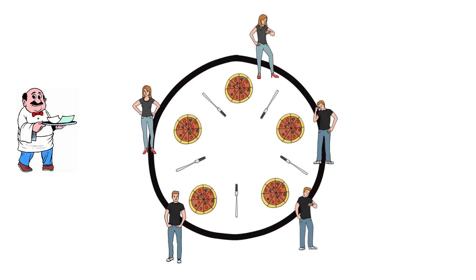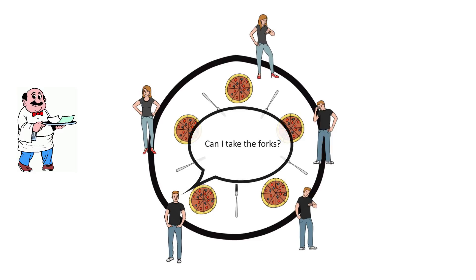There are many ways of solving the dining philosophers problem. One of the easiest to understand is to introduce a waiter into the room who lays down a rule: only one philosopher at a time can pick up one or a maximum of two forks. They must ask the waiter for permission, and only then can a philosopher actually be in the process of picking up forks. For example, philosopher one asks for permission, gets a yes, picks up the fork on the left, then the fork on the right, and signals to the waiter that he's done.